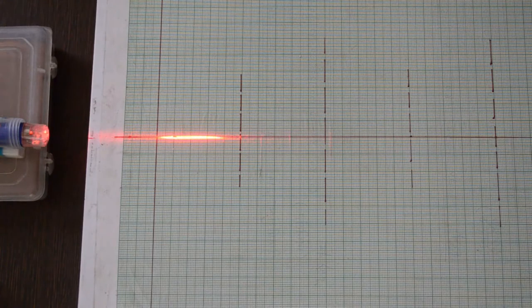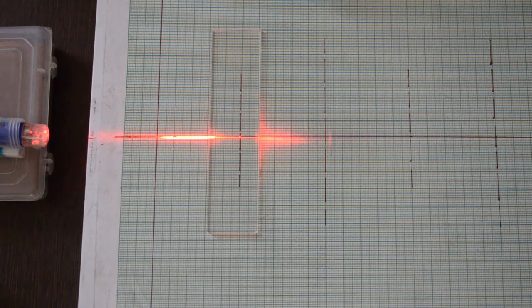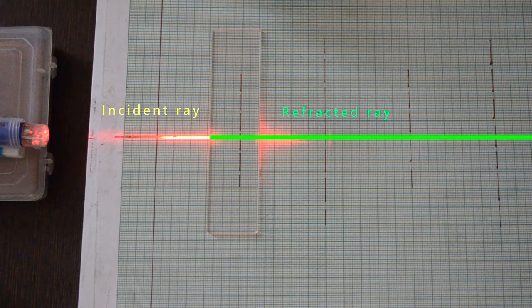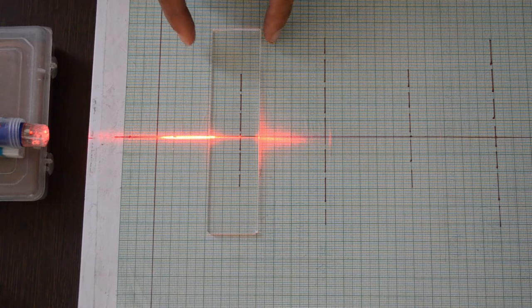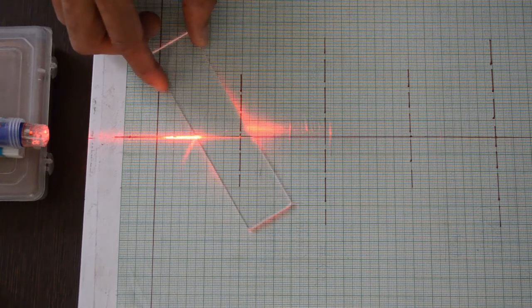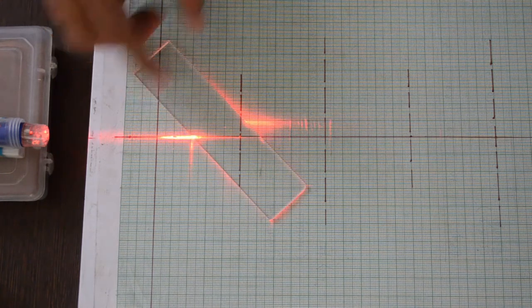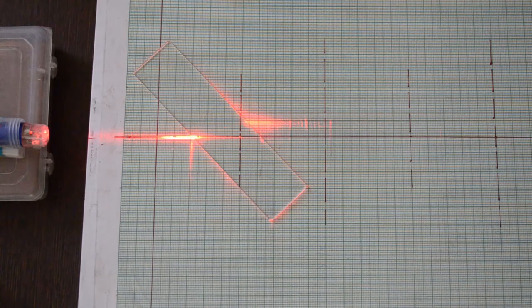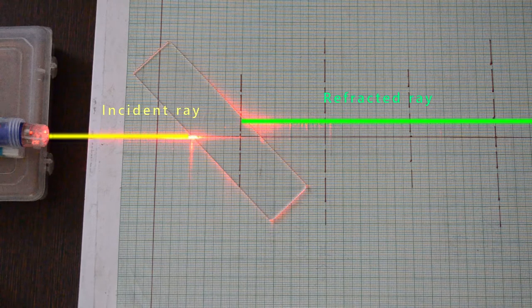When incident ray falls on the rectangular acrylic strip at 90 degrees, the refracted ray extends the same path. Tilting the strip on either side changes the path of light ray leaving the strip. This is due to a phenomenon called refraction we are all aware of.